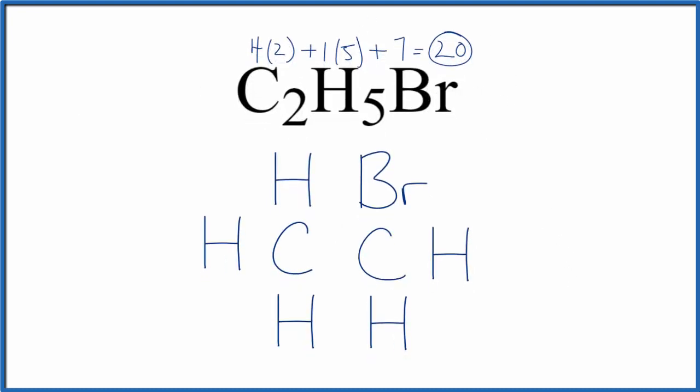So we have 20 valence electrons. Let's put a pair of electrons between atoms, and that's going to form the chemical bond. Then we can complete the octet on the bromine. Hydrogen only needs two valence electrons, so each of the hydrogens has two. We're done with those.